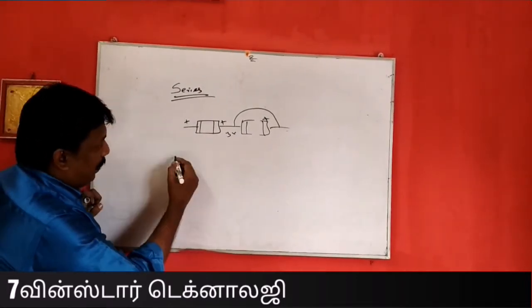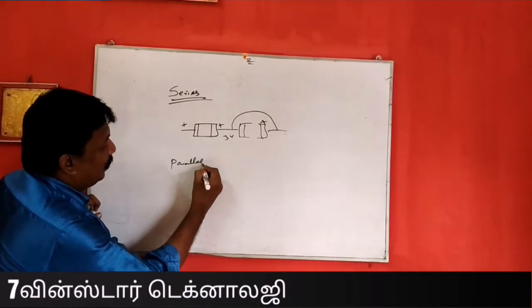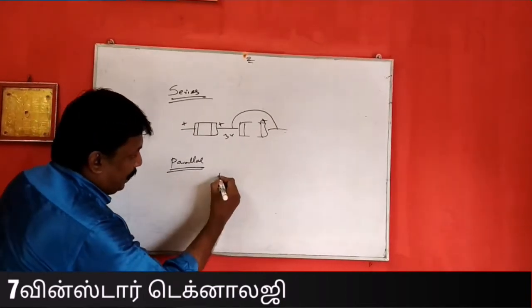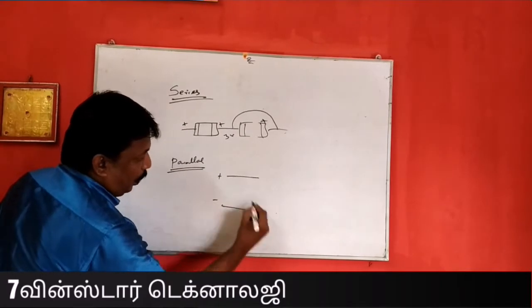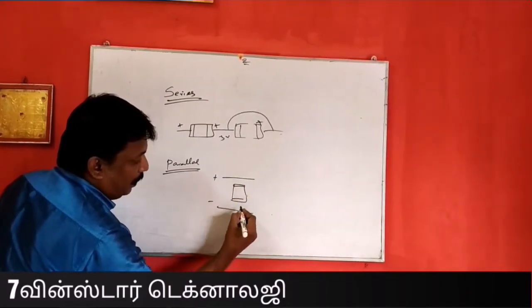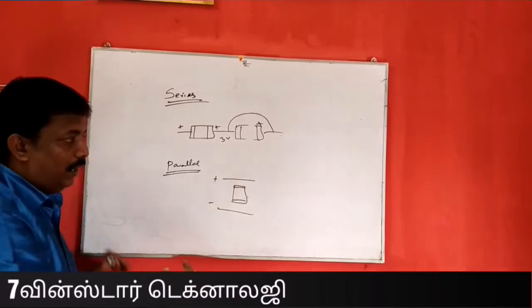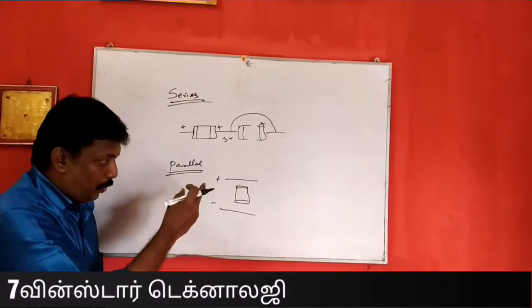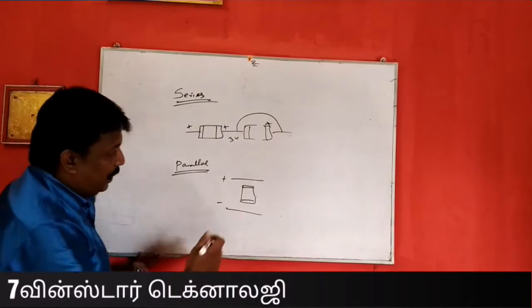Next we see the parallel. The parallel concept is plus and minus. If the color is silver — 3 and 2 — series parallel.